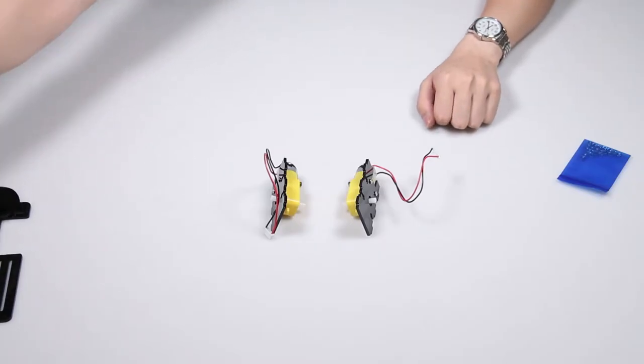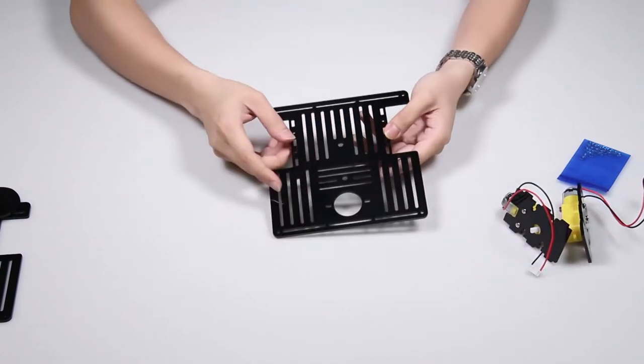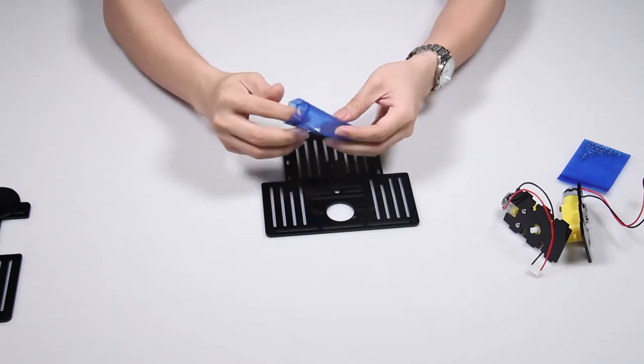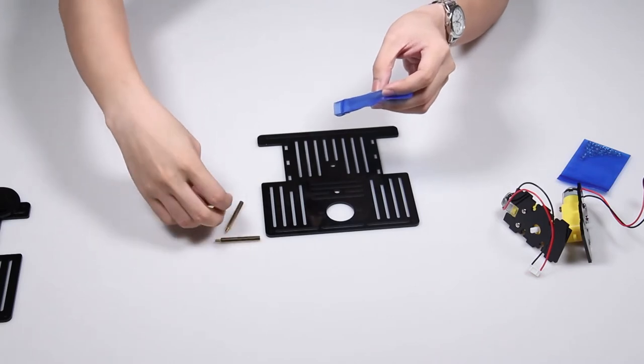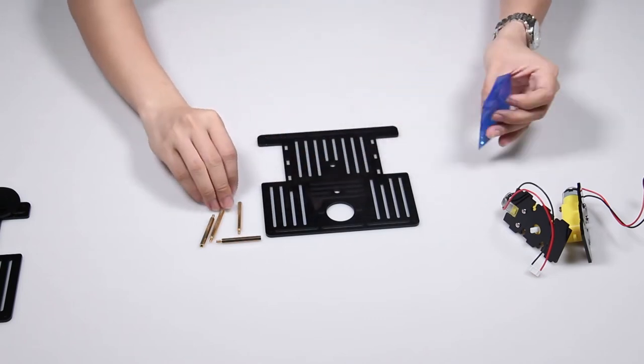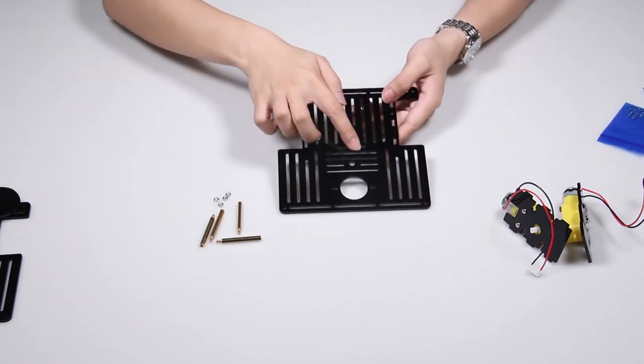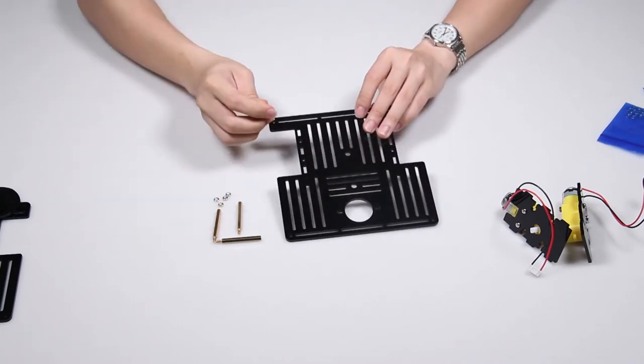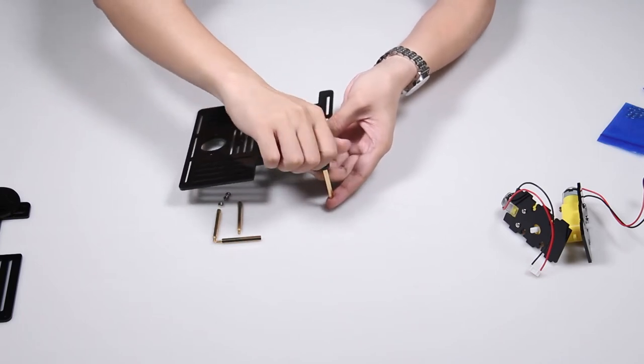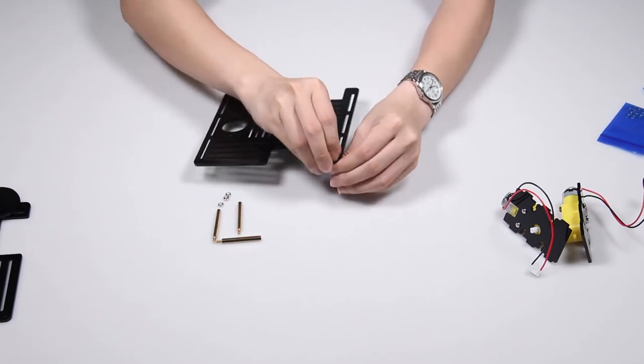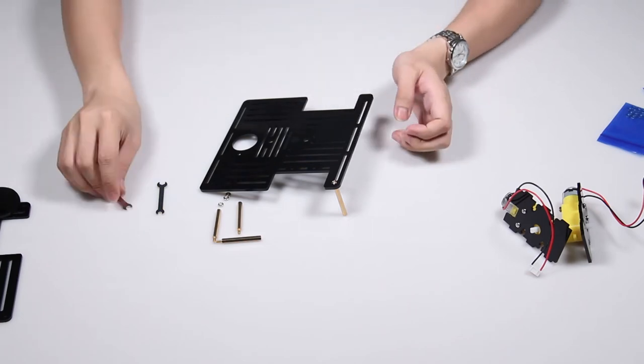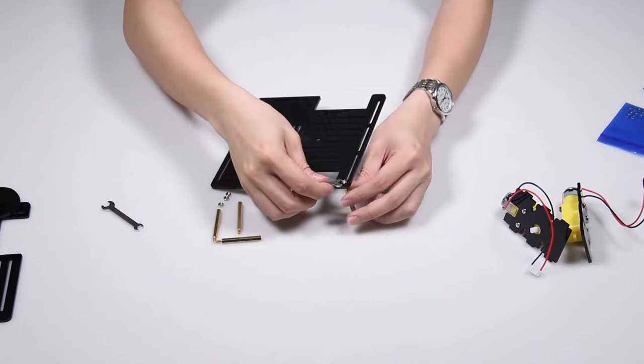When you finish, it should look like this. They are mirrored. Now take the bottom board. It should look like this. Put it aside with the round hole here and mount the M3x40 copper standoffs with M3 nuts. You can see a logo here. It should be on the bottom so the standoffs go here.